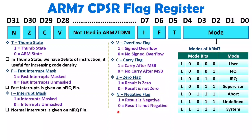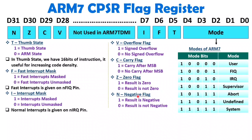Now let us understand how these flags work. These flags explain the status of instruction execution, and based on these status flags, ARM7 supports many conditional instructions. You can say almost all instructions have conditional execution, giving better program performance. Let us look at an example to understand how these bits operate.